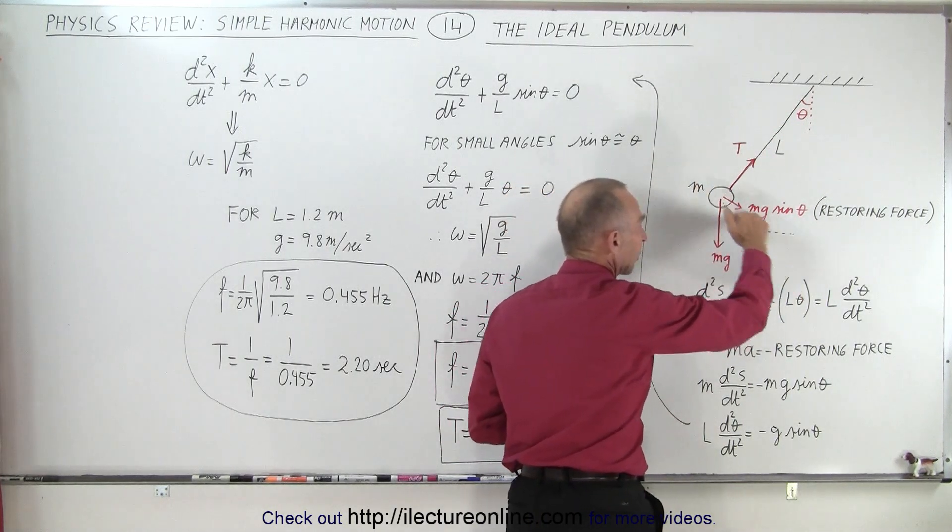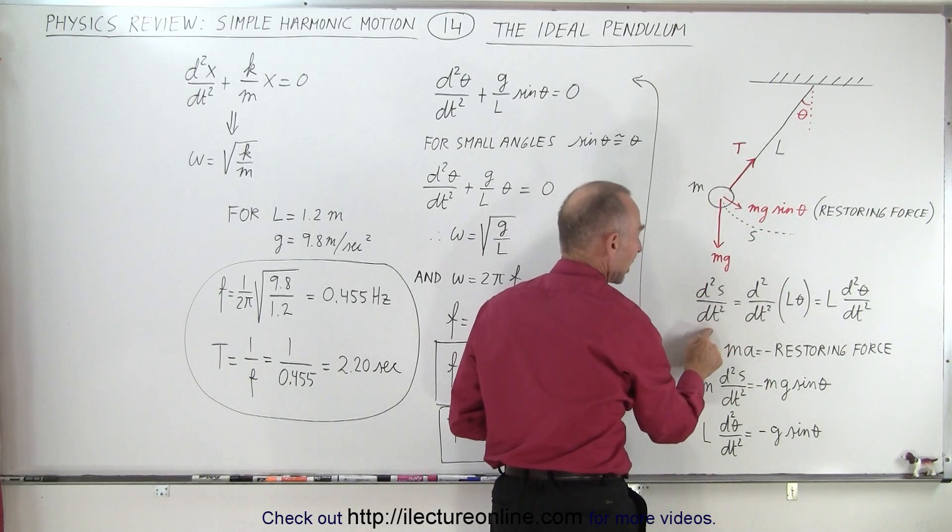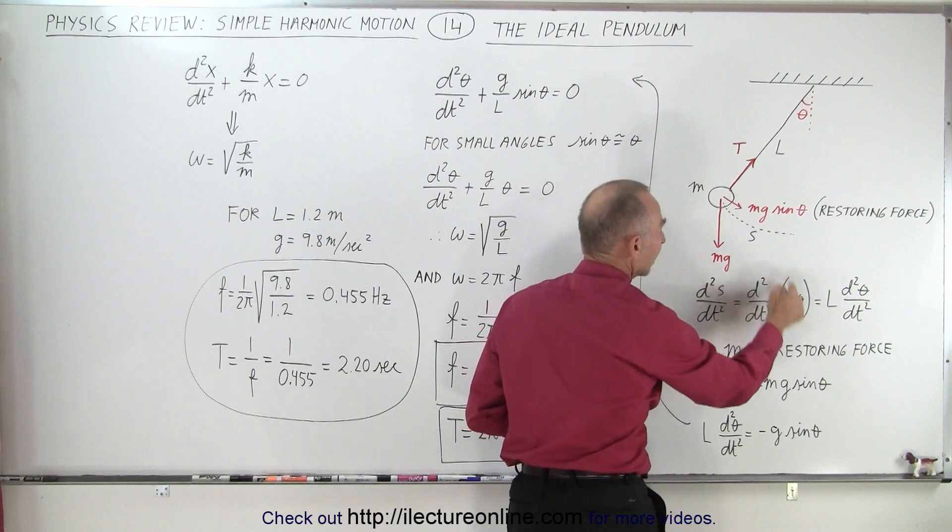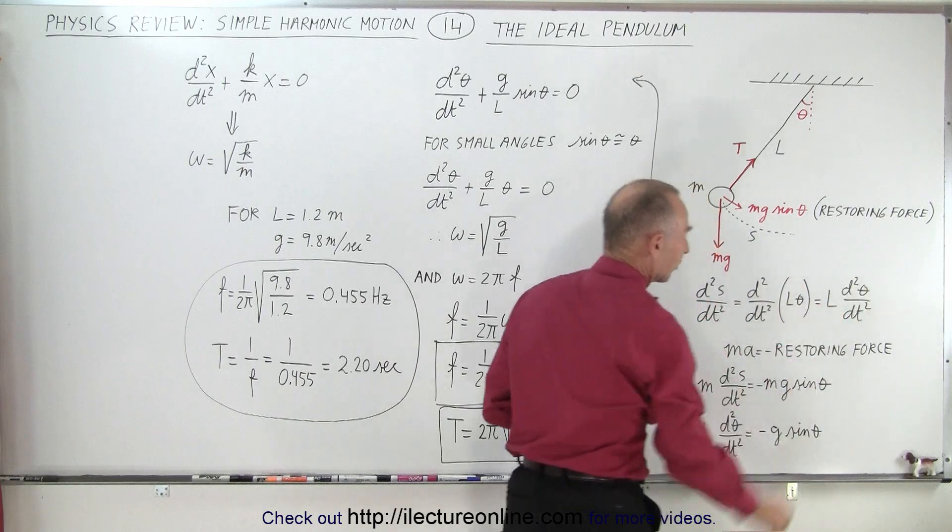So then we can take a look at the arc length right here. We can see that the second derivative of the arc length with respect to time is equal to the second derivative with respect to time of L times theta. L theta is the same as the arc length. L is a constant, so we end up with this expression.